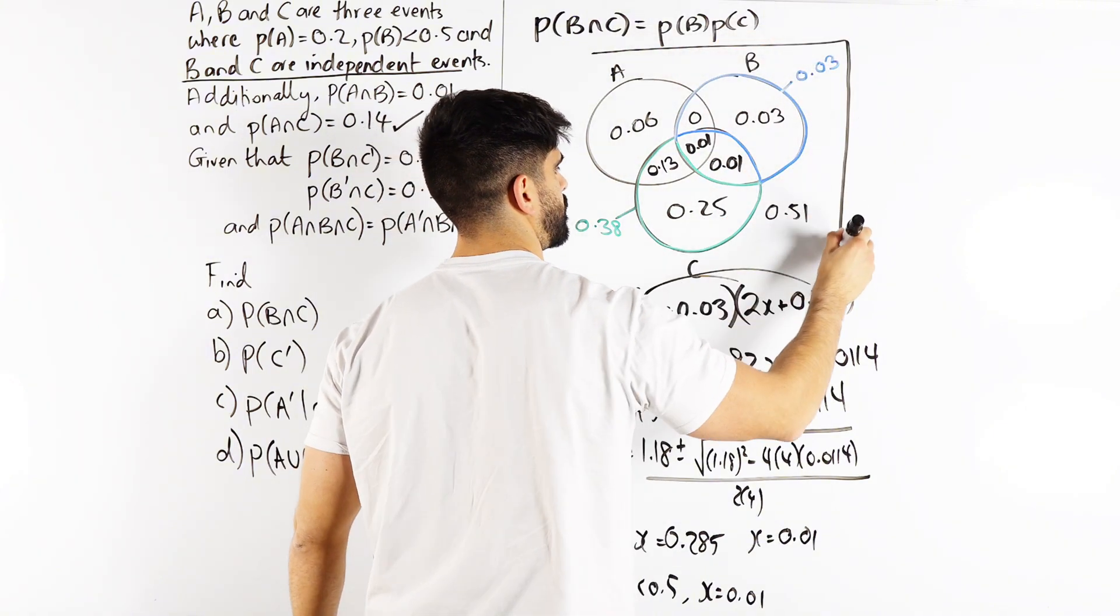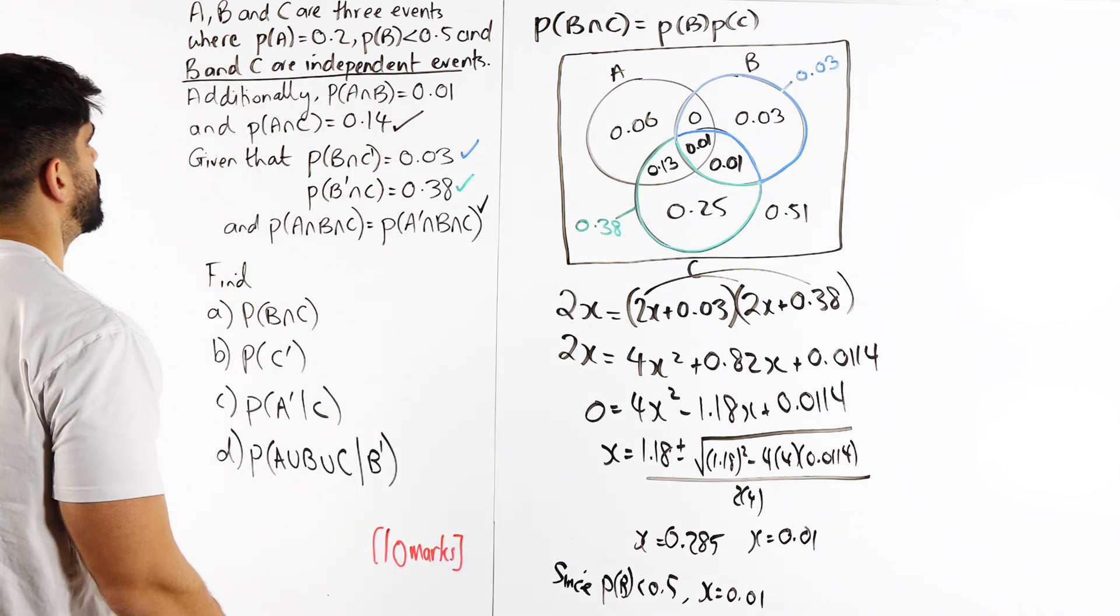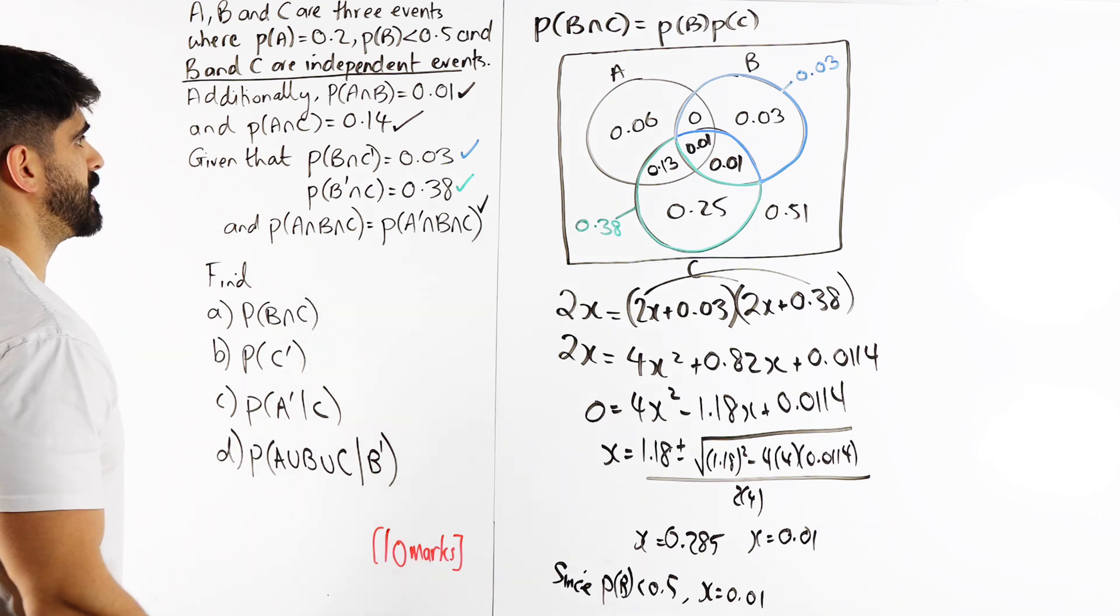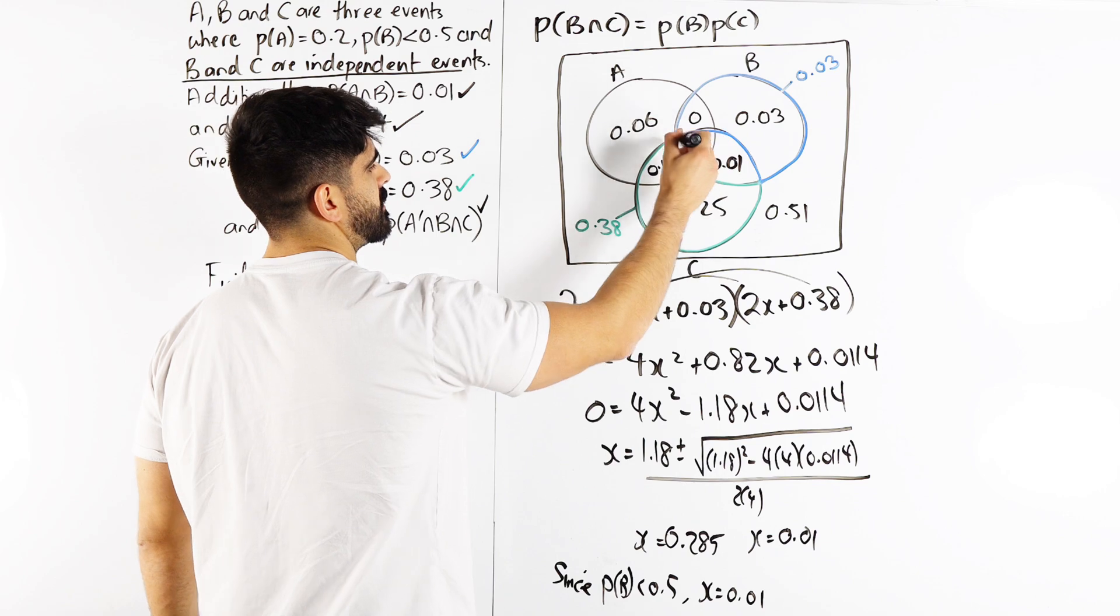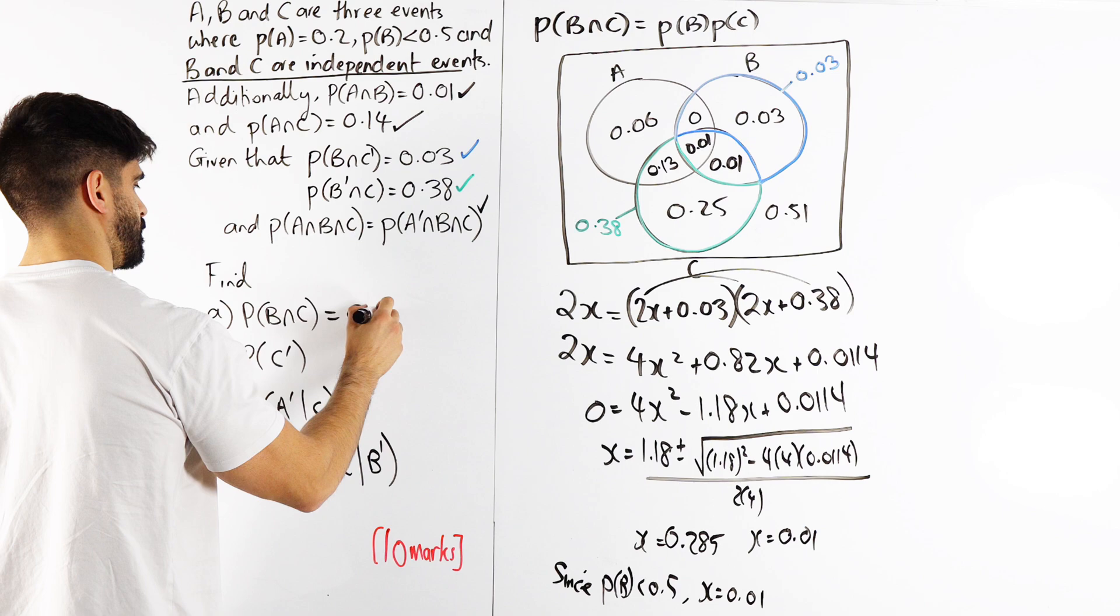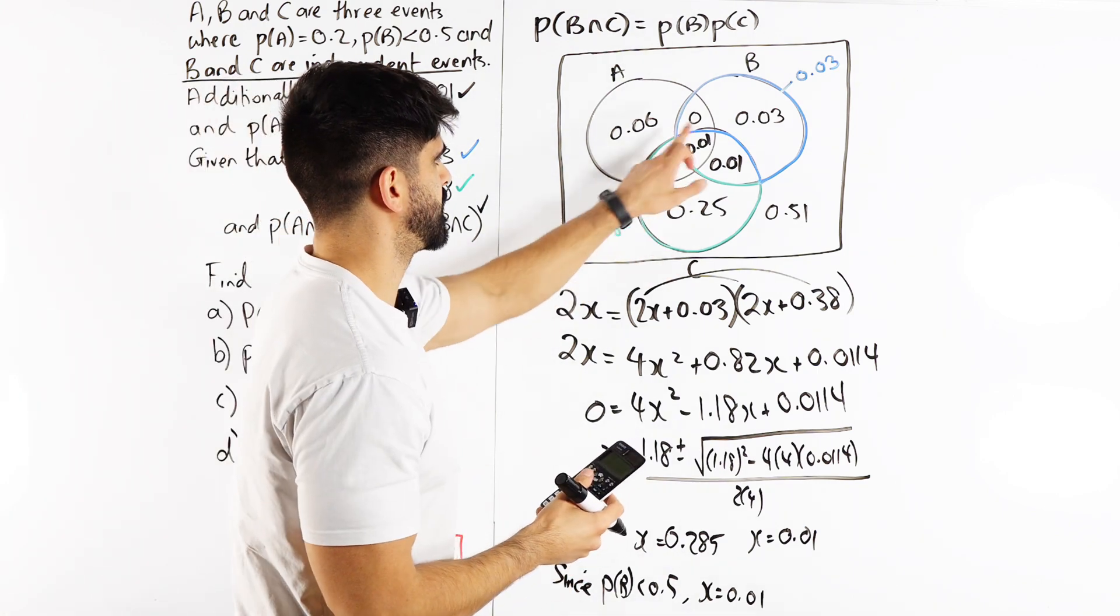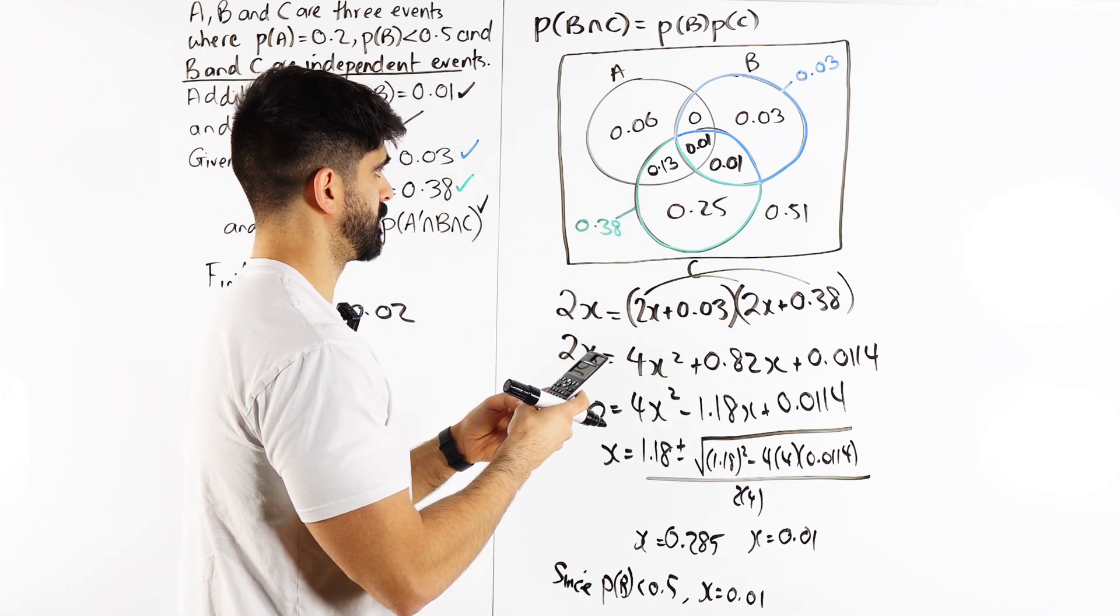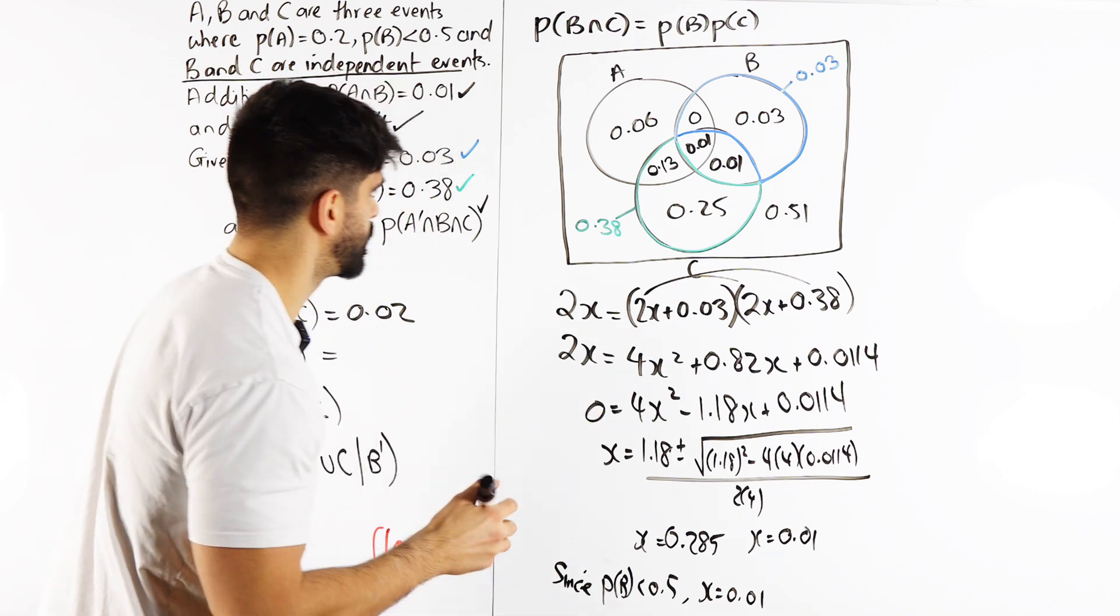Find the probability of B and C. B∩C, that's this overlap, 0.02. Probability of not C. We have C, we just add them up, subtract from 1. 25 plus 13 plus 1 plus 1 is 40. So 60, 0.6.